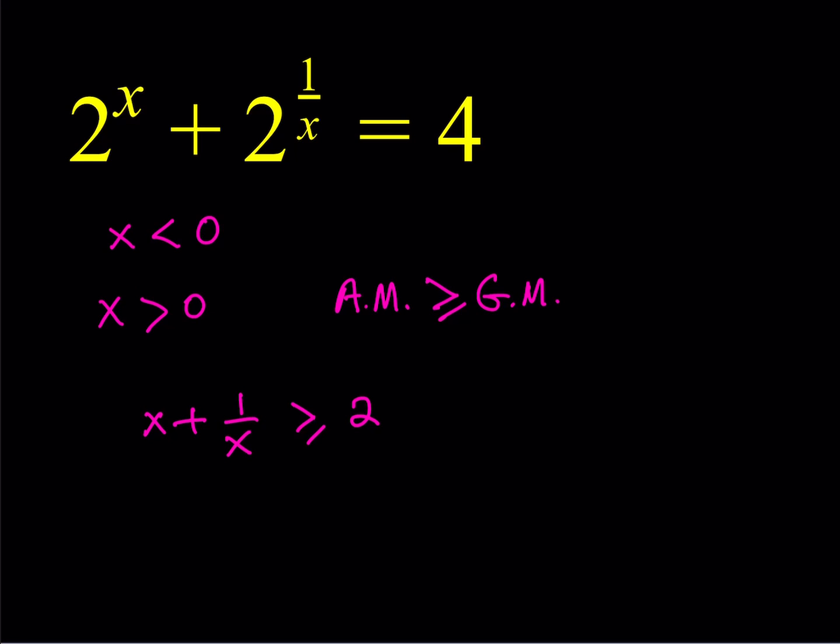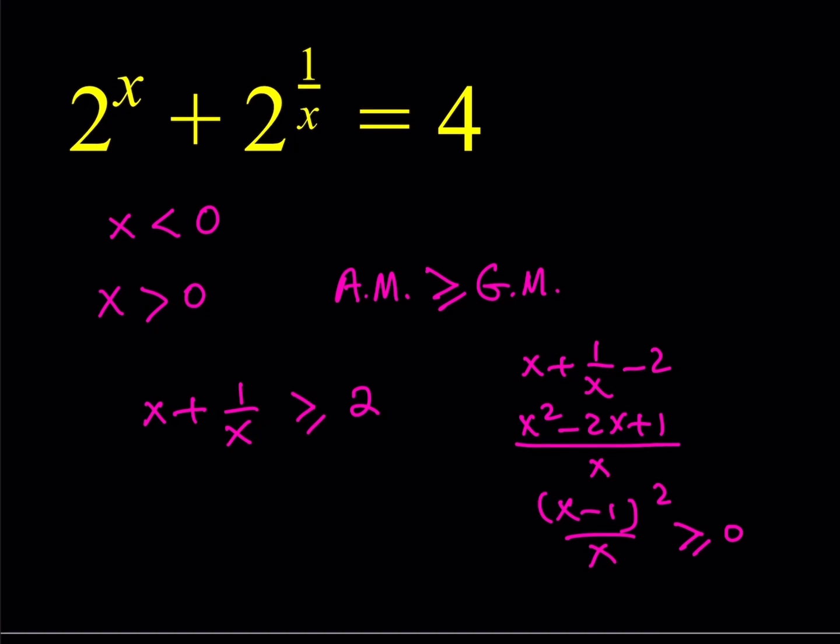Now, why is that happening? If you make a common denominator or if you go out and subtract two from both sides and look at this expression here, you're going to get x squared minus 2x plus 1 in the numerator and x in the denominator. Notice that the top is x minus 1 quantity squared and x is always positive. So you're talking about a non-negative quantity here, which proves that our inequality is true. So if x is positive, of course. So if x is positive, this is true.